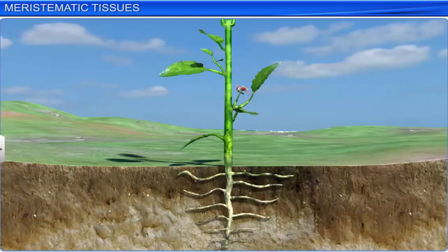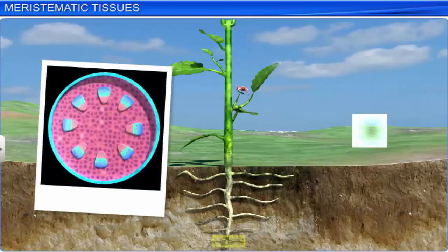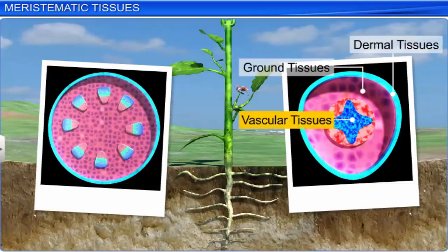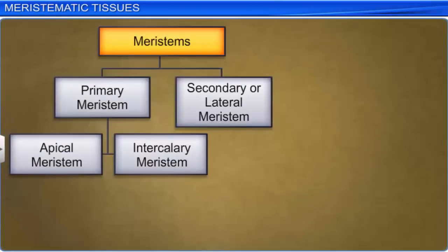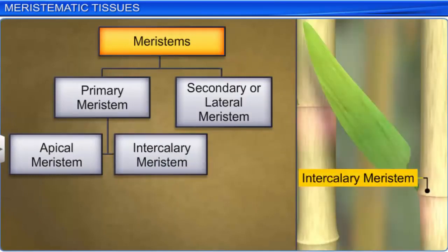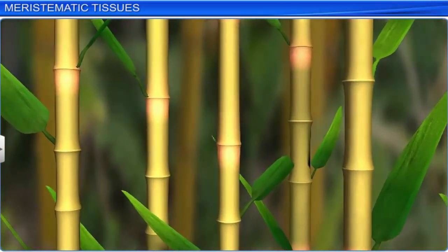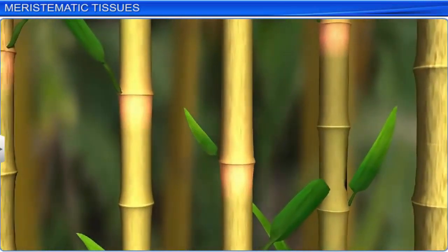During the formation of the primary plant body, some particular regions of the apical meristem produce dermal tissues, ground tissues, and vascular tissues. Another type of primary meristem is intercalary meristem, which occurs between mature tissues. It helps in regenerating grass blades removed or eaten by grazing animals.